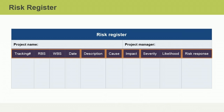The first four columns in the example register enable you to track each risk and its context throughout the project lifecycle. A tracking number uniquely identifies each recorded risk so that it can be easily referenced and monitored. The RBS column links each risk to its category within the risk breakdown structure, and the WBS column associates each risk with the work components it may affect within the work breakdown structure. The date column lists the date at which each risk was identified.